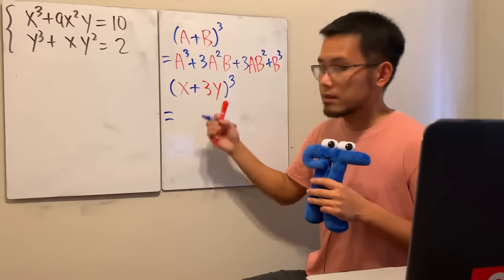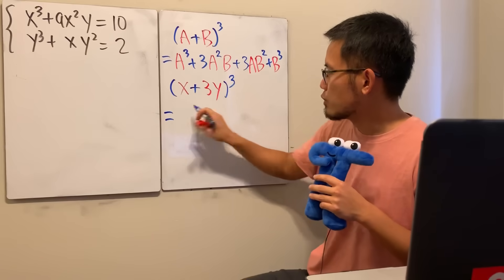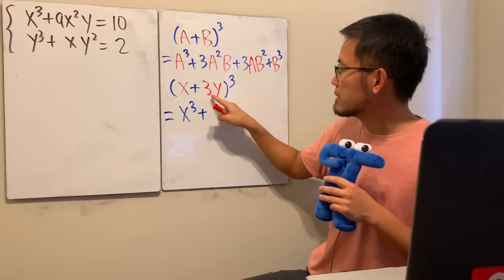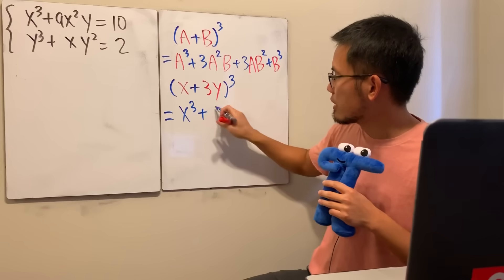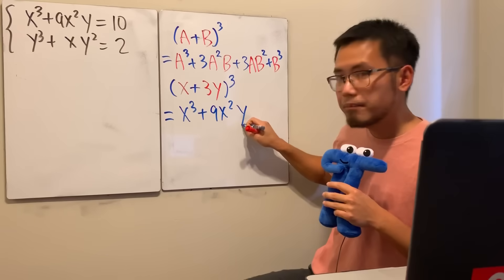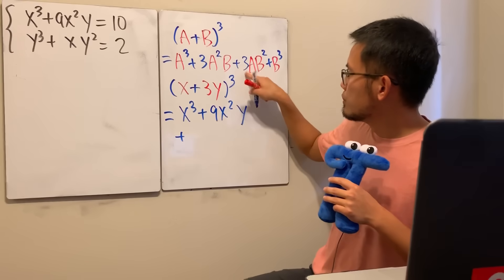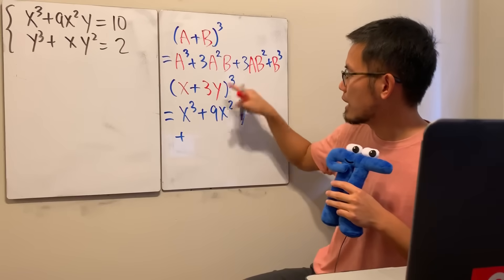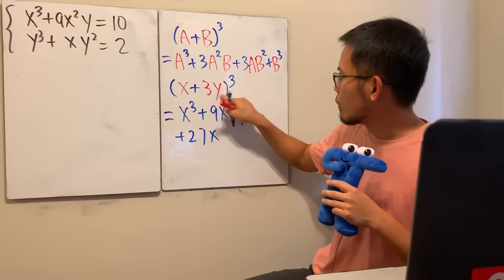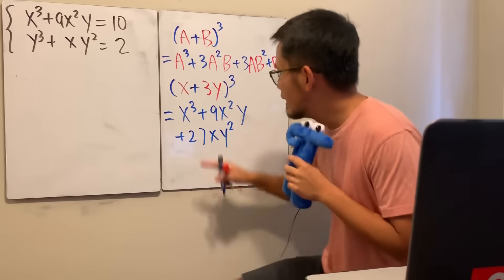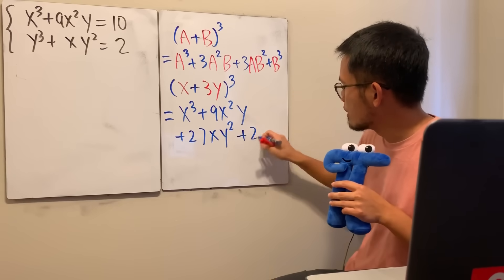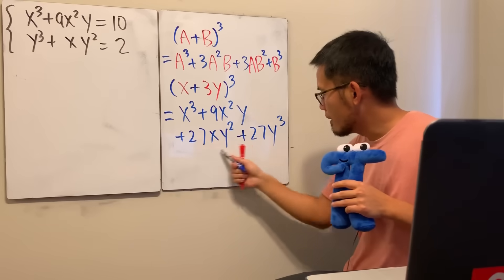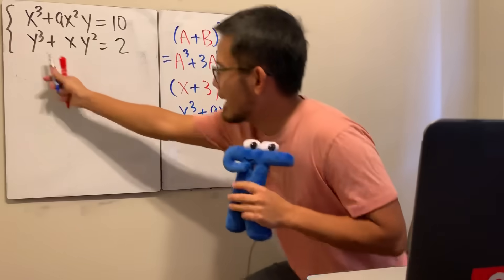Let's work this out. (x + 3y)³ gives us x³, then 3 · x² · (3y) = 9x²y, then 3 · x · (3y)² = 27xy², and lastly (3y)³ = 27y³. This matches our equations perfectly!